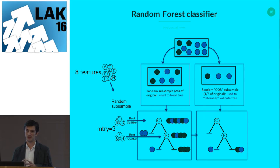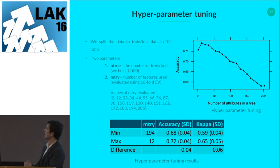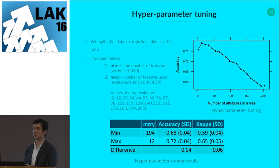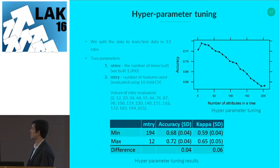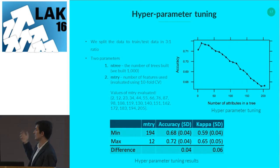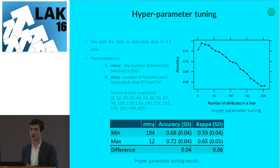There are two parameters to tune. The first is the number of trees. The second, mTry, is how many attributes you allow per split. With 205 attributes, we used cross-validation to evaluate different values from 2, 12, and so on. The best turned out to be 12 — a significant difference in terms of kappa of 0.06, which when you're trying to squeeze performance is quite high. Using only 12 of 205 attributes per split is very restrictive, meaning decision trees don't overfit to noise and are more generalizable.